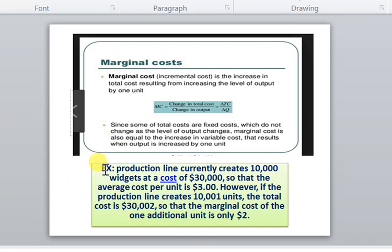I'll tell you an example of Marginal Cost. The formula for Marginal Cost is the change in total cost by change in output. You need to know what is fixed cost and variable cost. If you want to see my previous lectures on this, refer to my videos. Here's a basic example: a production line currently creates 10,000 widgets at a cost of 30,000 dollars, so the average cost per unit is 3 dollars.